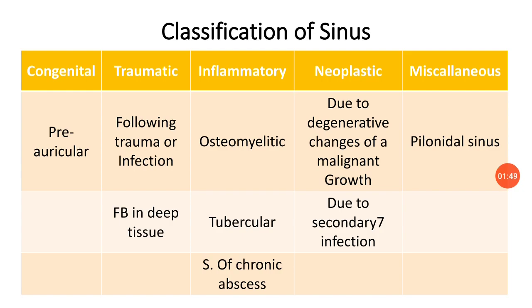The classification of sinus is based on the causes by which the sinus persists. There are five categories. First of all, congenital — present since birth due to an embryological defect — for example, preauricular sinus.